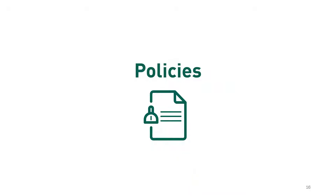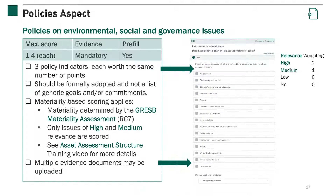The second aspect of the management component is policies. There are three indicators in this aspect, all very similar: one for environmental, one for social, and one for governance policies. This indicator applies materiality-based scoring, meaning that only the issues that are material to the entity need be addressed. Which issues are material is determined by the GRESB materiality assessment. For more information, see the lesson on materiality-based scoring. Only issues deemed of medium and high relevance count towards the score for this indicator; issues of low or no relevance will not contribute. Scoring issues of high relevance are allocated double the weight of issues of medium relevance. To achieve full points, policies need to cover all of the material issues.